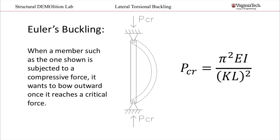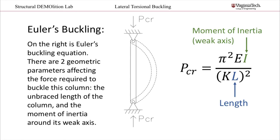As you likely already know, when a member such as the one shown is subjected to a compressive force, it wants to bow outward once it reaches a critical force. The deflected shape can be seen with the dotted lines. On the right is Euler's buckling equation. There are two geometric parameters affecting the force required to buckle this column: the unbraced length of the column, and the moment of inertia around its weak axis. Keep that in mind as we further discuss lateral torsional buckling.